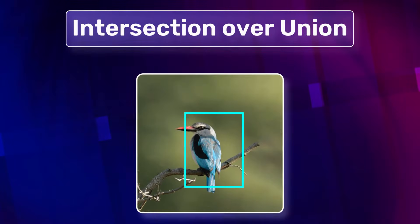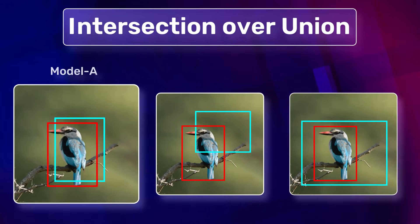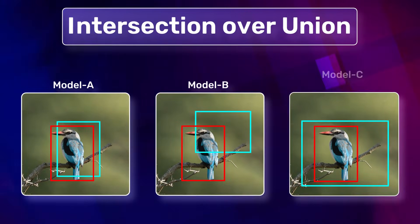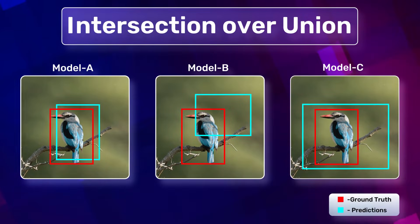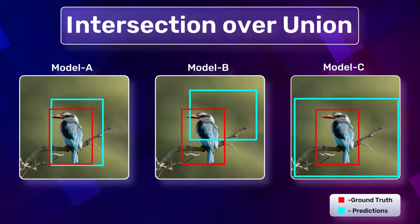Let's use this bird image as a reference. We have three object detection models: Model A, Model B, and Model C. Ground truth has been illustrated using red color and predictions are shown using cyan color.